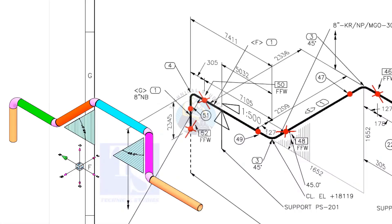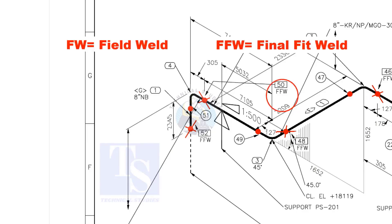In the drawing, you can see the terms like FW and FFW. FW stands for field weld. FFW means final fit weld. That is, an additional length of pipe is added to the calculated dimension, add an FFW for field trim allowance.